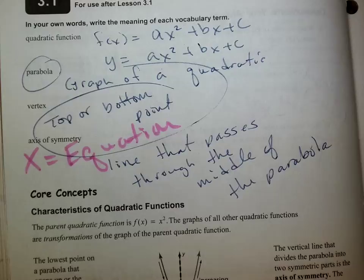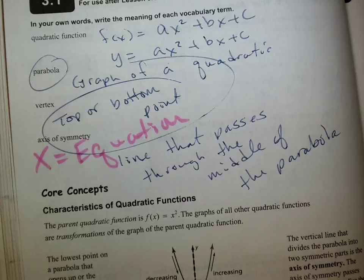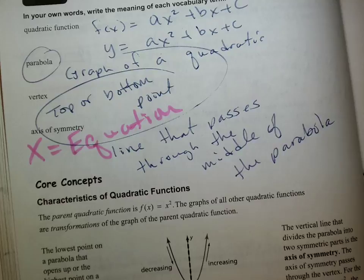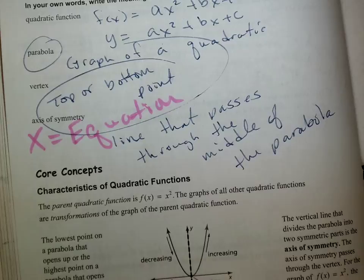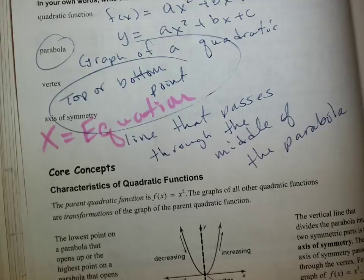Shift over to problem number one on our extra practice — we're going to go to page 77. Does this seem pretty easy so far? Big key is this: 0 squared is 0, 1 squared is 1, 2 squared is 4, 3 squared is 9, and then the same on the other side.